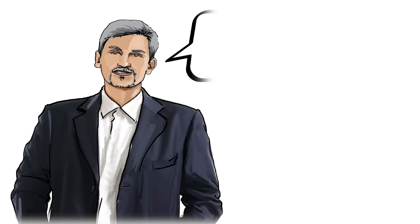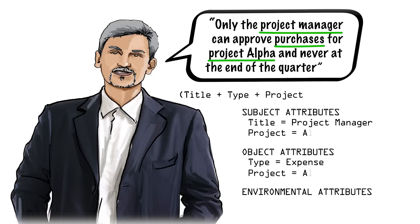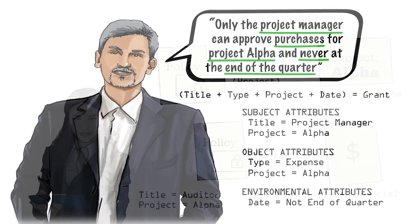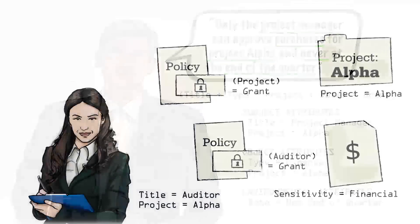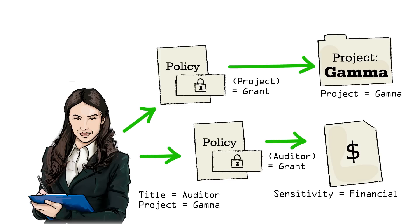These ABAC policies can be derived from policy in natural language and can even include environmental conditions. When Linda moves to another project, system administrators do not need to change access policies. Instead, they simply need to remove Linda's old project attribute and assign a new one.